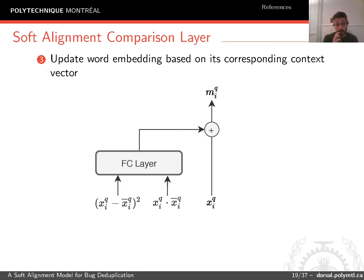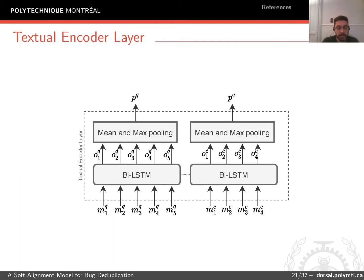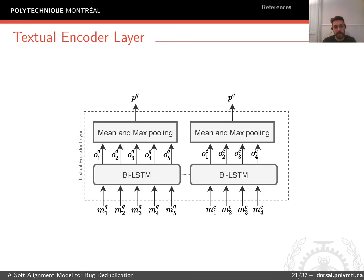The next step is the textual encoder layer, which uses a BiLSTM to aggregate contextual information into the word embeddings. We then apply mean and max pooling to generate a fixed-length representation of the reports. P_Q represents the fixed-length representation of the query and P_C of the candidate. Finally, we have a comparison layer — a fully connected layer that receives each fixed-length report representation and compares them.